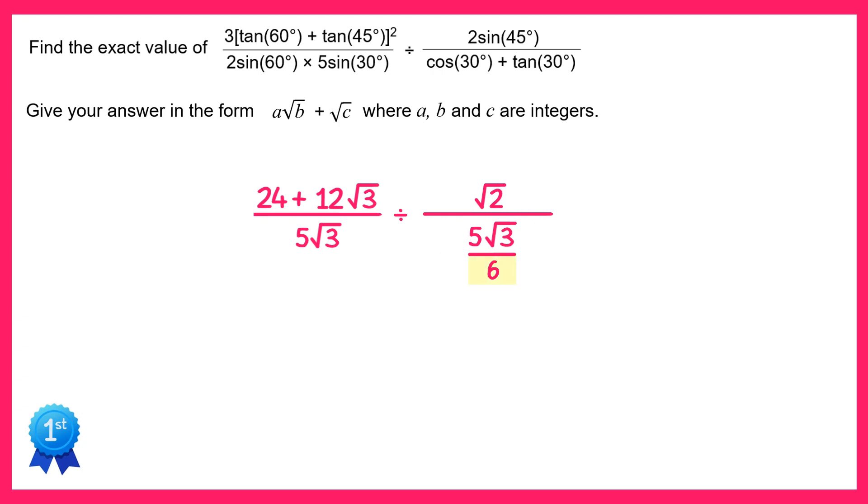We can deal with this divide 6 in the same way we dealt with the divide 2 on the other one, just by multiplying the top by 6. So we end up with 6 root 2 over 5 root 3. Now this is a division of fractions but we can change it to a multiply and take the reciprocal of the second fraction, and then these 5 root 3's here will cancel out.